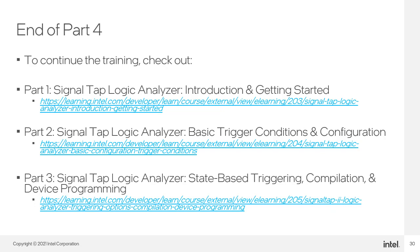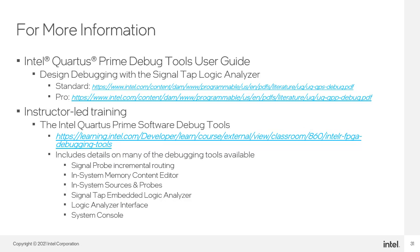This concludes the final part of this training. If you missed any of the previous parts, you can register for them for free at the links shown here. To learn about additional resources available to help you with using the SignalTap Embedded Logic Analyzer, continue to the next slide. For more information, be sure to read the SignalTap chapter in the Intel Quartus Prime Software Debug Tools User Guide — both the Standard and Pro Edition versions of the guide are linked here. If you'd like hands-on experience with the logic analyzer, enroll in the Intel Quartus Prime Software Debug Tools Instructor-Led Training, where you'll work with the SignalTap ELA on an Intel FPGA development kit with direct assistance from an Intel FPGA training engineer.